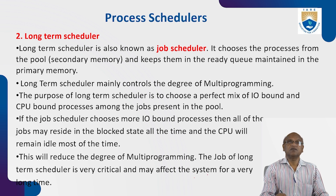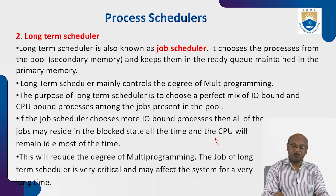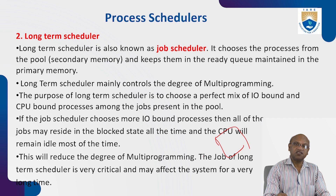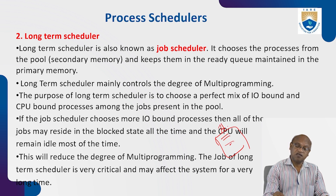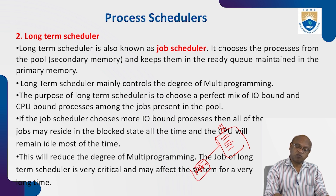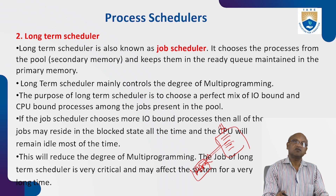The second type is the long-term scheduler, also known as the job scheduler. It chooses processes from the pool — that is, the secondary memory, or hard disk. Bringing a program directly from the hard disk to the CPU is not possible; first it must go to RAM. The long-term scheduler is responsible for bringing whichever program you want to execute from the hard disk to the RAM.